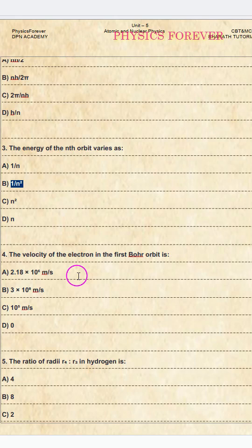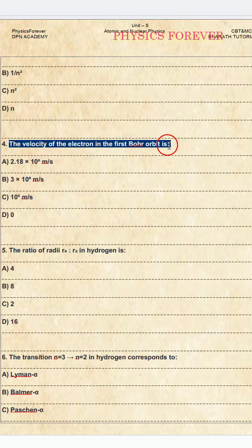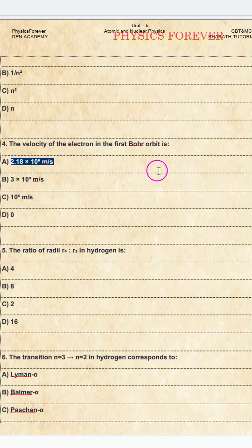Question number four: the velocity of the electron in the first Bohr orbit is? The correct option is A, 2.18 × 10⁶ meter per second.